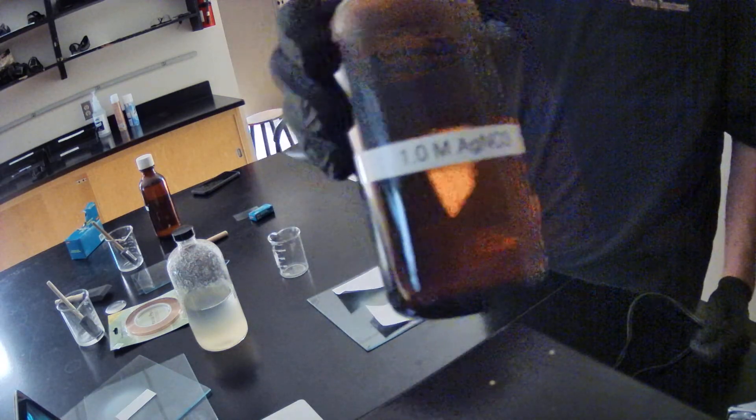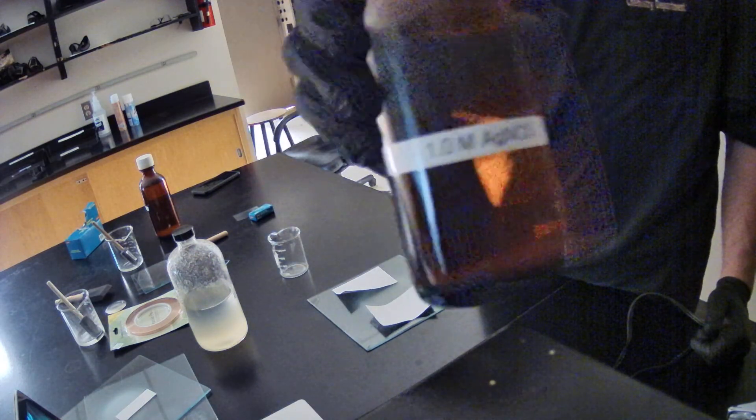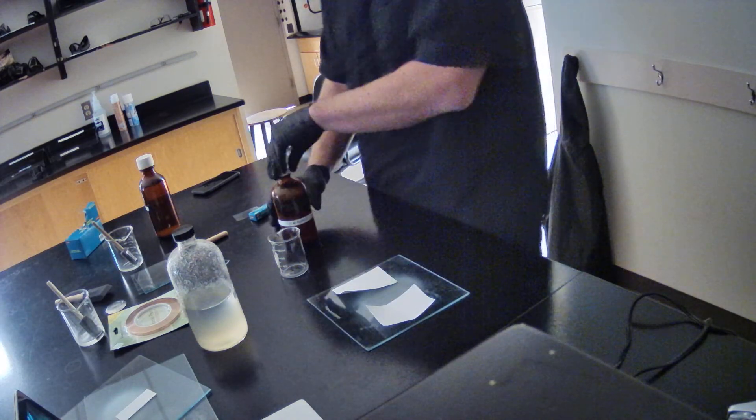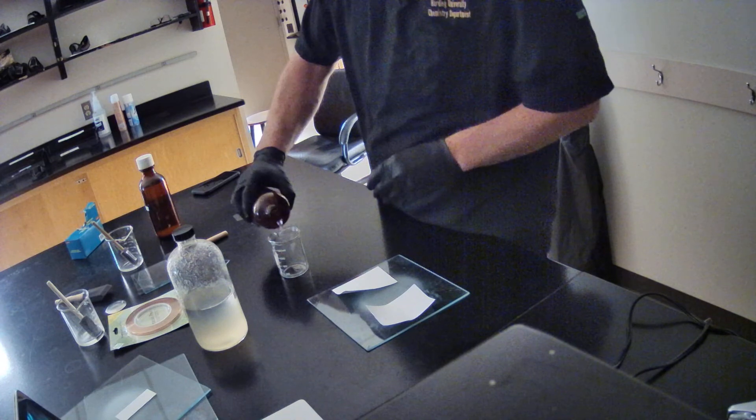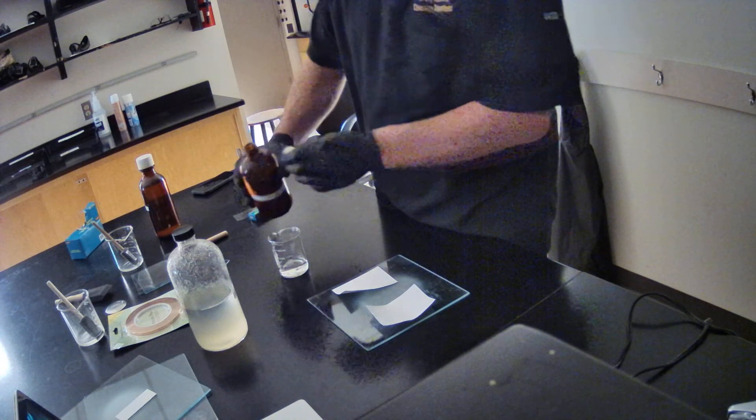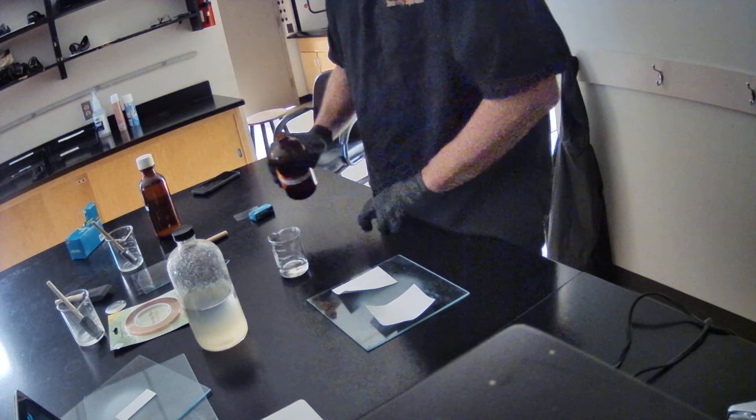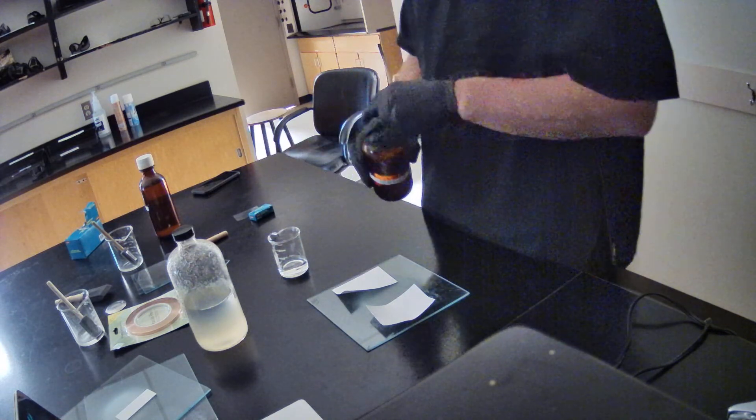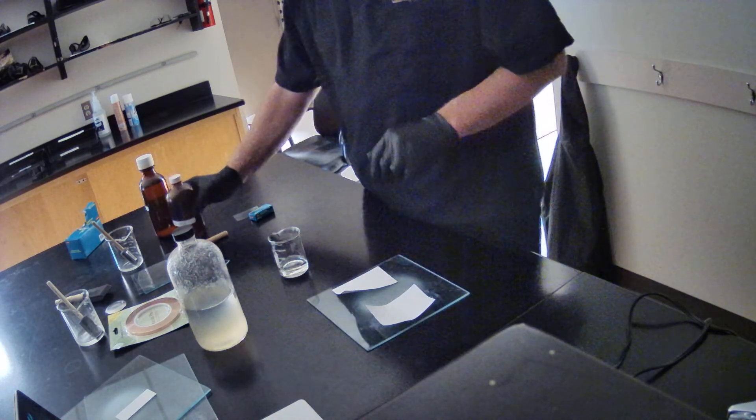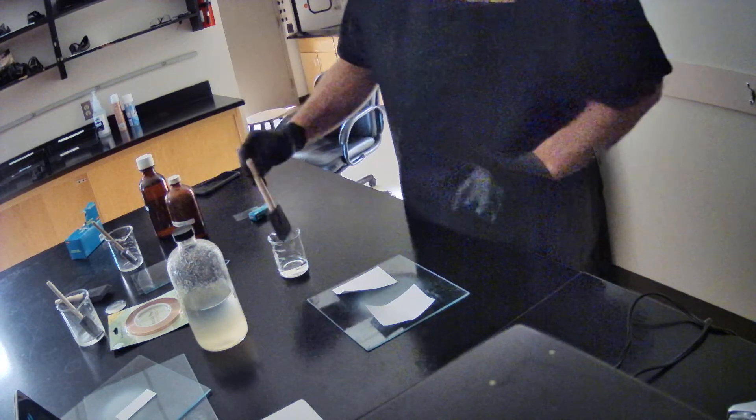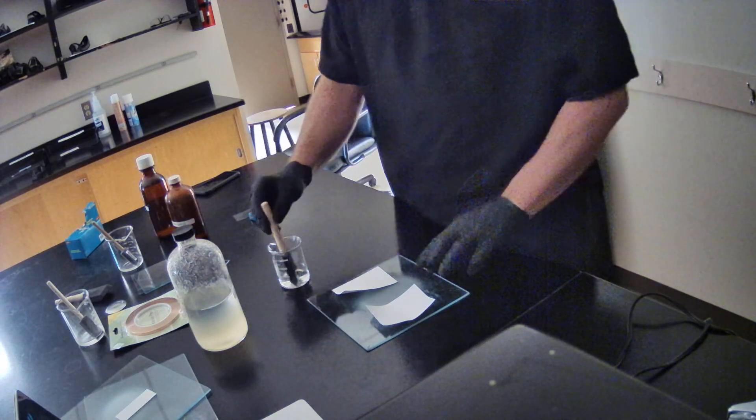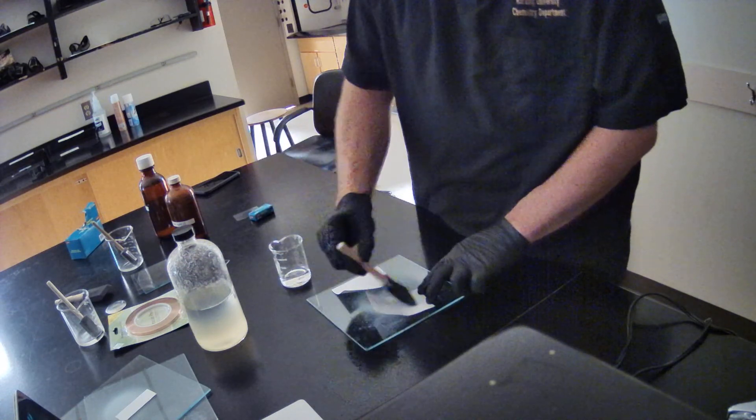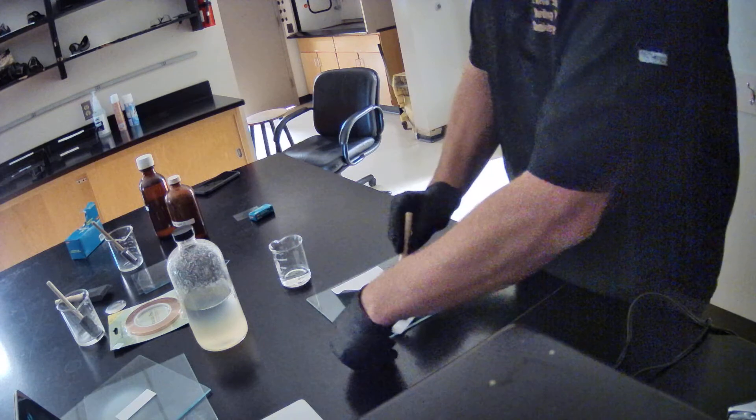Alright, so we've got one mole of silver nitrate, and we're going to coat the paper with the silver nitrate. Now we're going to coat the paper with the solution because it will very easily stain. So we're going to put a nice thin layer of the silver nitrate.